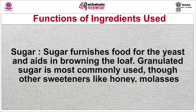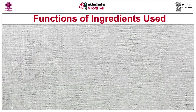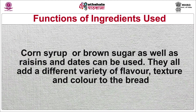The second ingredient is sugar. Sugar furnishes food for the yeast and it aids in browning the loaf. Granulated sugar is most commonly used, though other sweeteners like honey, molasses, corn syrup or brown sugar, as well as raisins and dates can be used. They all add a different variety of flavor, texture and color to the bread.